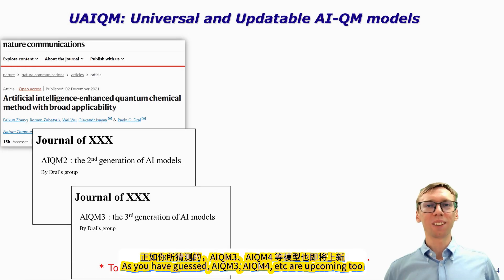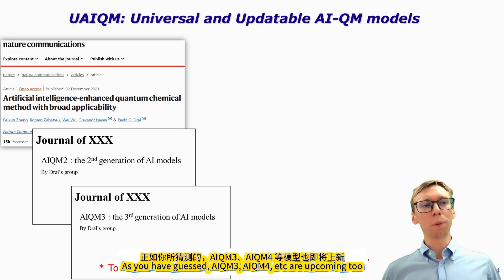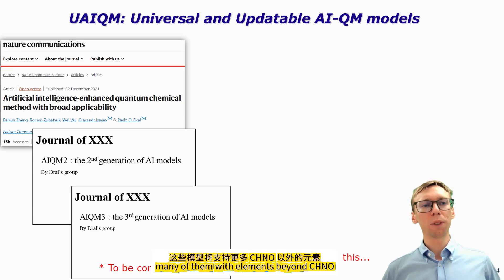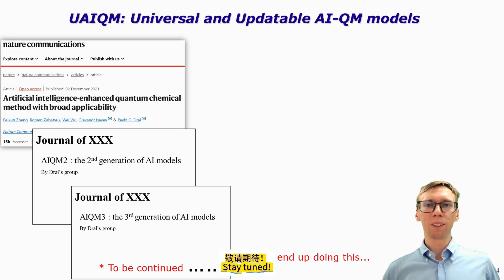As you may have guessed, AIQM3, AIQM4, and so on are our upcoming models — many of them with elements beyond CHNO. Stay tuned!